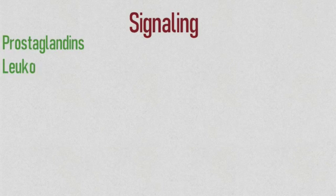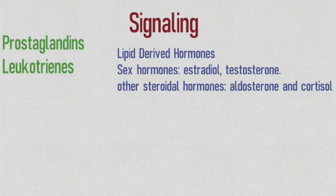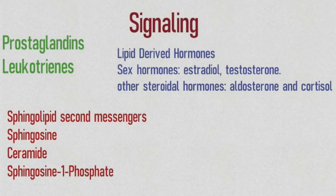Lastly we have signaling. Lipid signaling involves any process in which the messenger is a lipid. Prostaglandins are a group of lipids involved in dealing with injury and illness. Lipoproteins play a role in inflammation and allergy reaction. Lipid-derived hormones like sex hormones and other steroidal hormones like aldosterone and cortisol. Lipids play an important role as mediators in signaling like sphingosine ceramide and sphingosine-1-phosphate.